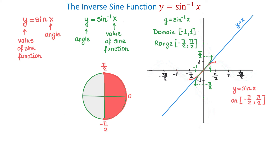We can also show this interval using the unit circle. On the unit circle, moving counterclockwise from zero gives us pi over 2, which is 90 degrees, and moving clockwise gives us negative pi over 2, which is negative 90 degrees. Each time we evaluate an inverse sine function, we get an angle in the interval from negative pi over 2 to positive pi over 2.